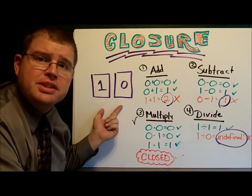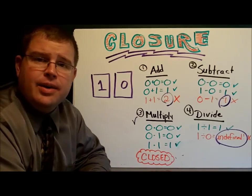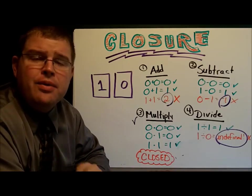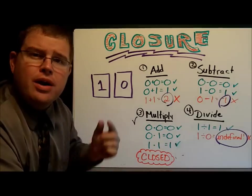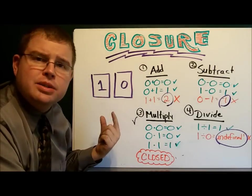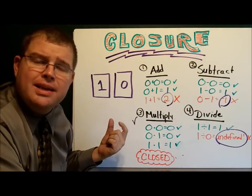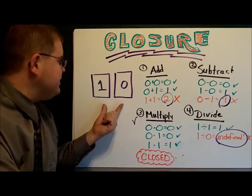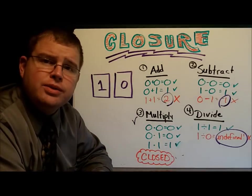I'm giving you two numbers here, a one and a zero. And I'm going to tell you that you can do anything you want to these two numbers. You can add them, subtract them, multiply them, divide them, and your answer is always going to be one of those two numbers.